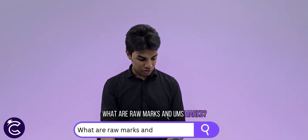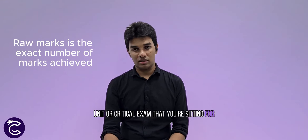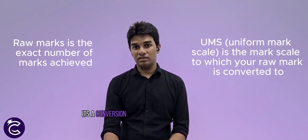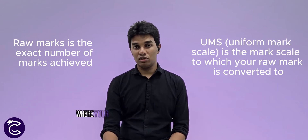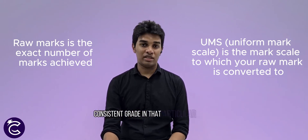What are RAW marks and UMS marks? RAW marks are basically the marks that you yourself obtain in your particular unit or exam that you are studying for. UMS, on the other hand, is a conversion — it stands for Uniform Marking Scale — where your RAW marks are converted into a consistent grade for that particular subject. The purpose for exam boards introducing UMS is so that exams from different exam sessions have a consistent marking scale and can be compared across students from other exam sessions.